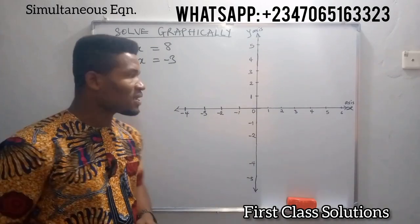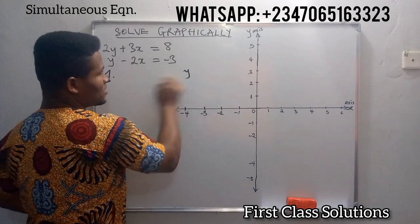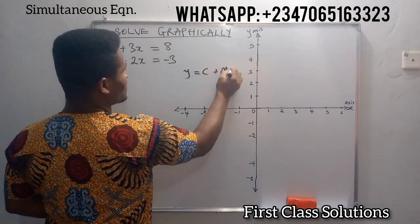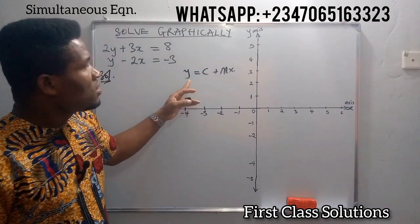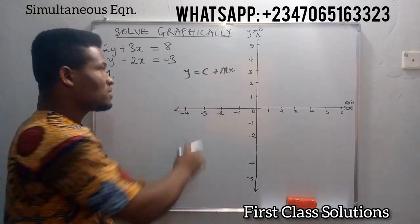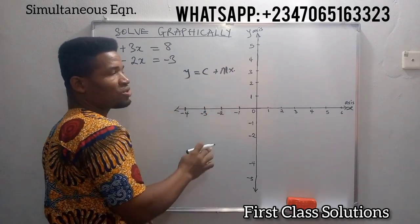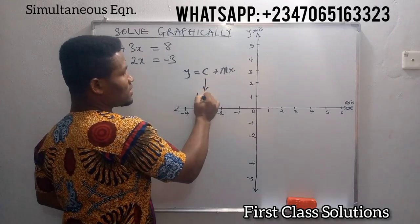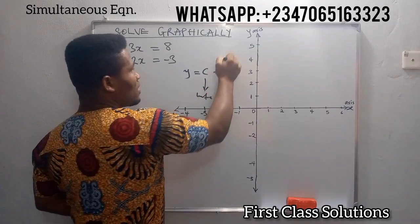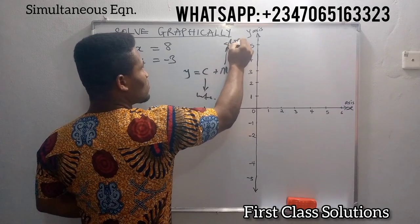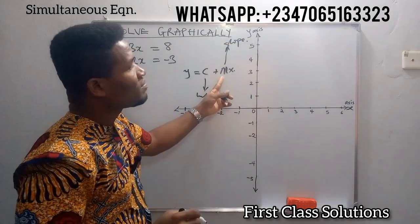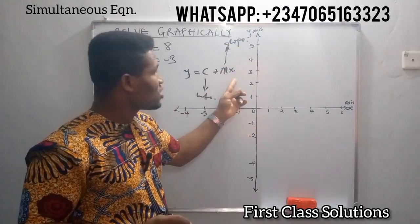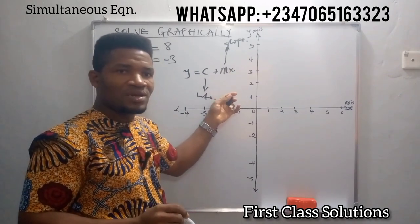What do we mean by the equation of a straight line? In a straight line, let's assume y equals c plus mx. This is an equation — it's a straight line equation, a linear equation — where c is our intercept and m is the slope. This slope can also be called the gradient. It is the coefficient of x.